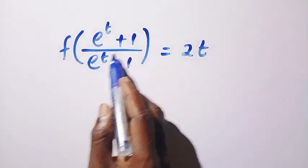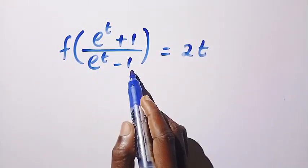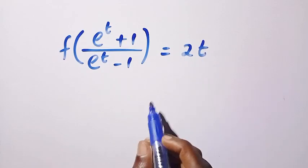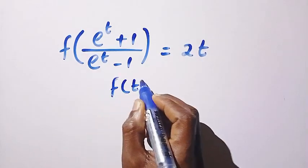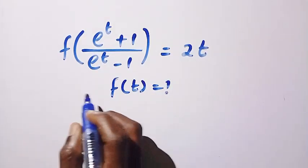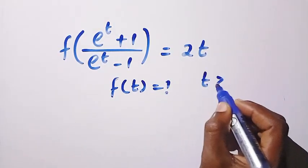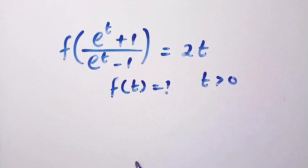f of (e^t + 1)/(e^t - 1) equals 2t. So we want to find f(t) here, and we should know that t is greater than 0.